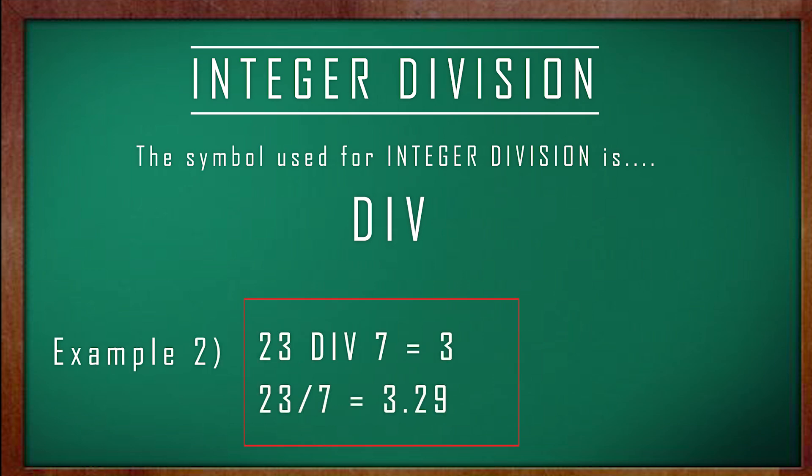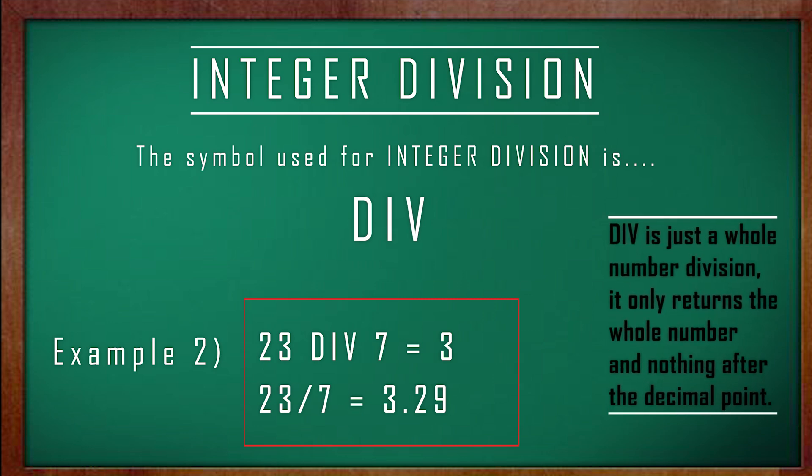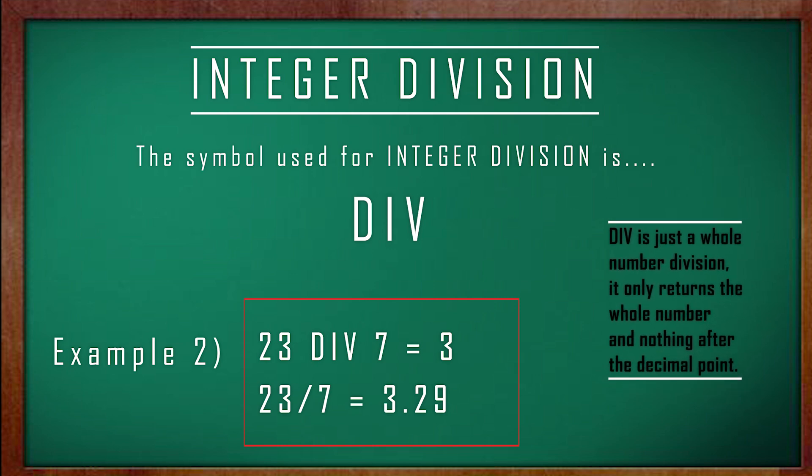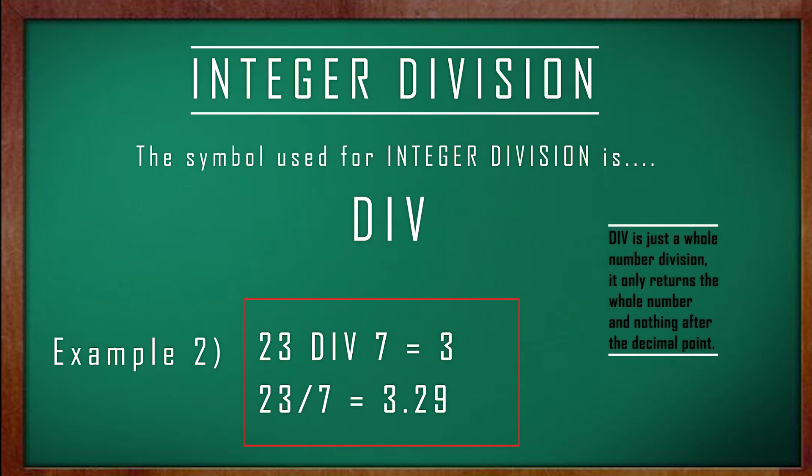Now if we have a look at our second example, 23 DIV 7 is equal to 3. That's because 23 divided by 7 is 3.29, and we only return the integer value of 3.